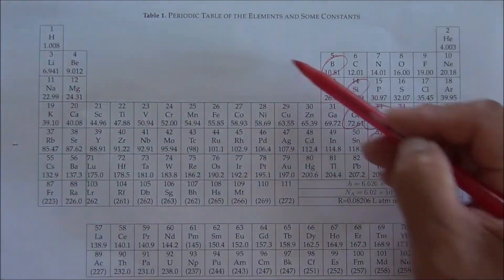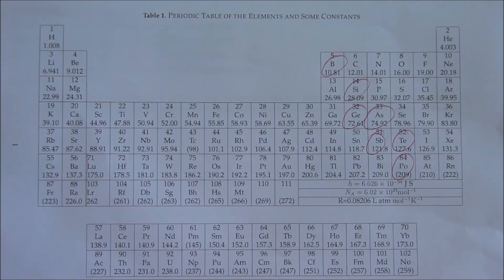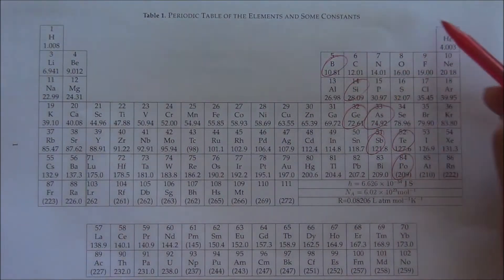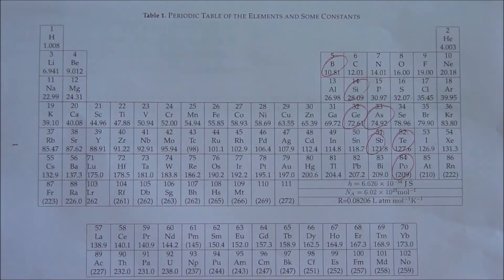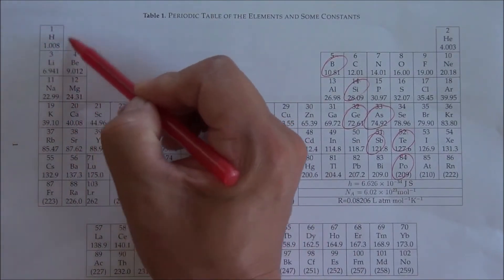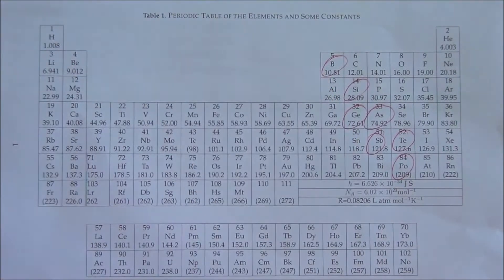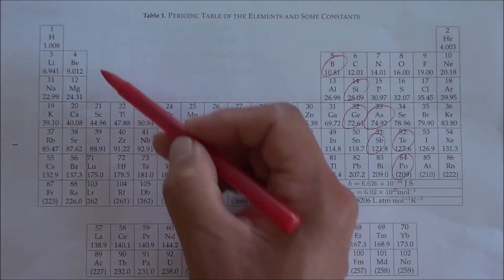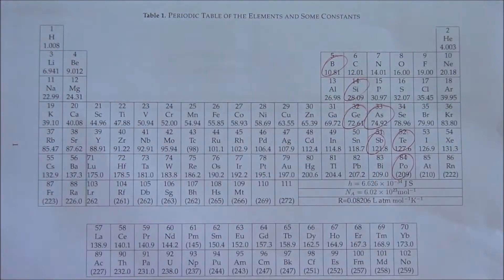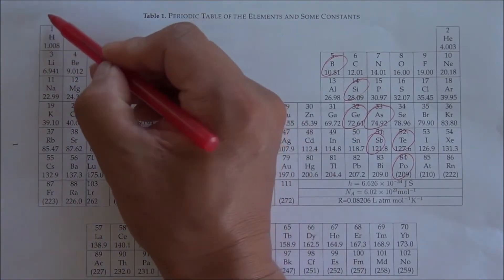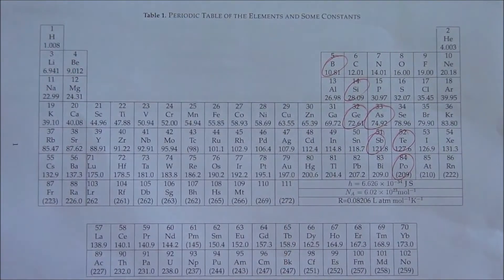Metals can lose electrons to form simple cations. Non-metals can obtain additional electrons to form simple anions. Hydrogen can obtain an electron or lose an electron. When hydrogen combines with metals, it obtains one additional electron to form an anion. When hydrogen combines with non-metals, it loses electrons to form a simple cation.